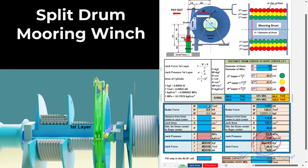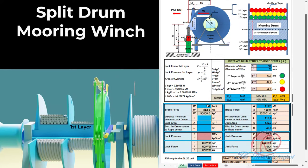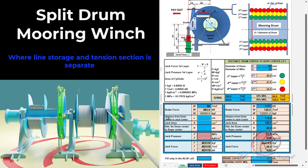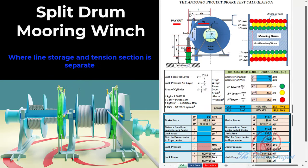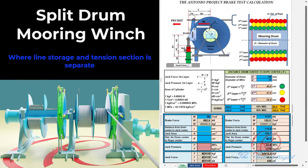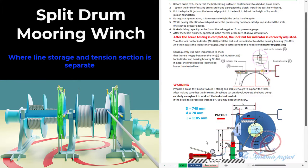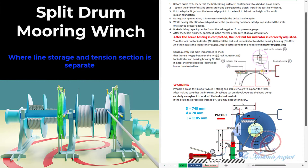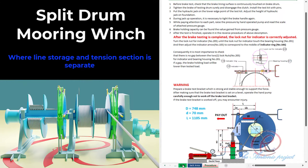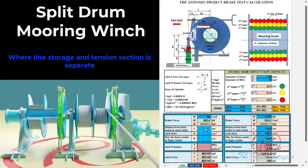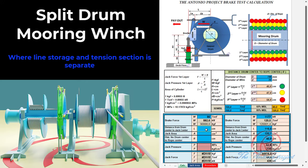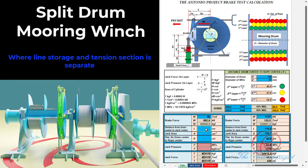Next is the calculation of break force. Break force for 60% MBL is 90 tons. Next is inputting the distance from the drum center to the jack center; the distance is 1105 millimeters, which I will input as 110.5 centimeters.